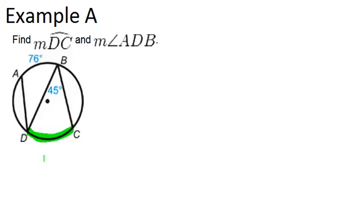And what we notice in relation to this arc is an inscribed angle that intercepts that arc. This is an inscribed angle because it's all the way on the other side of the circle, and that means that it is half the measure of the arc.